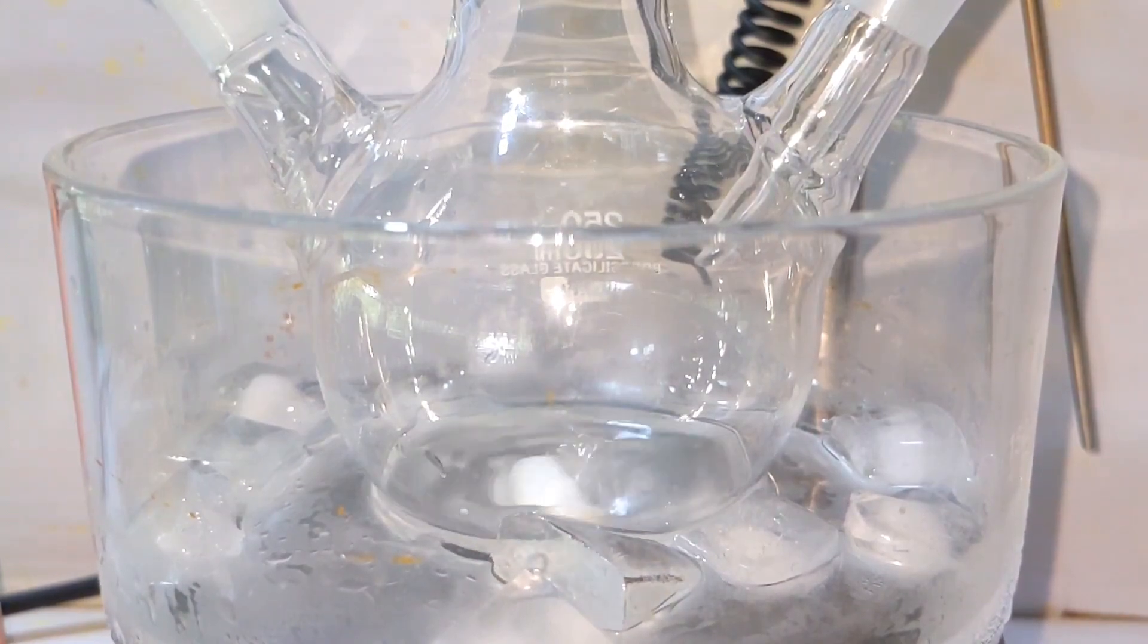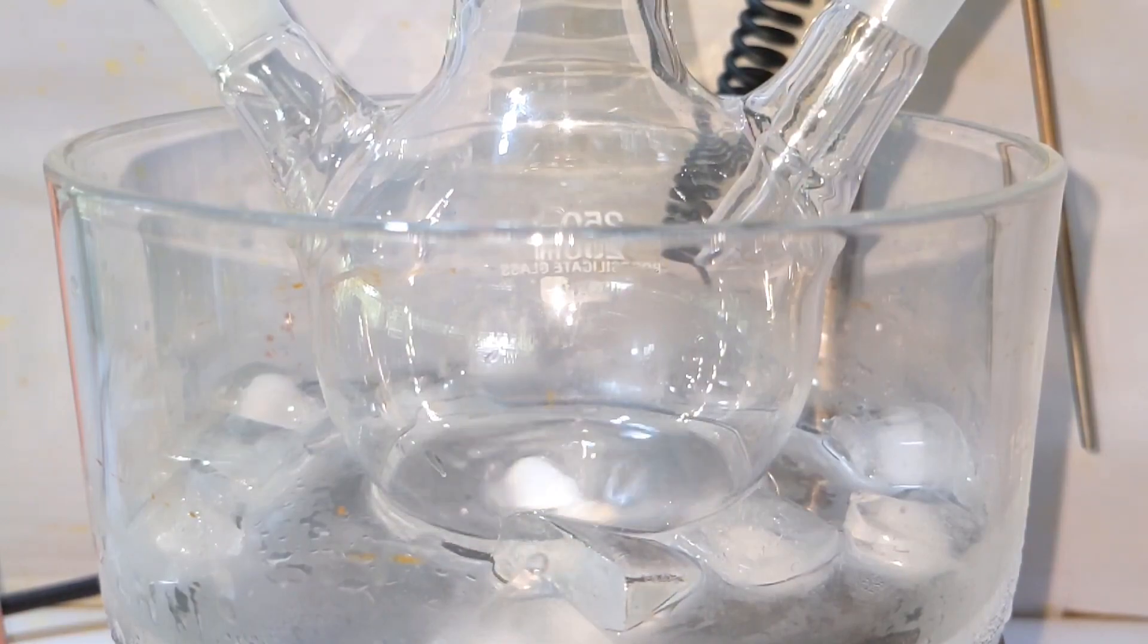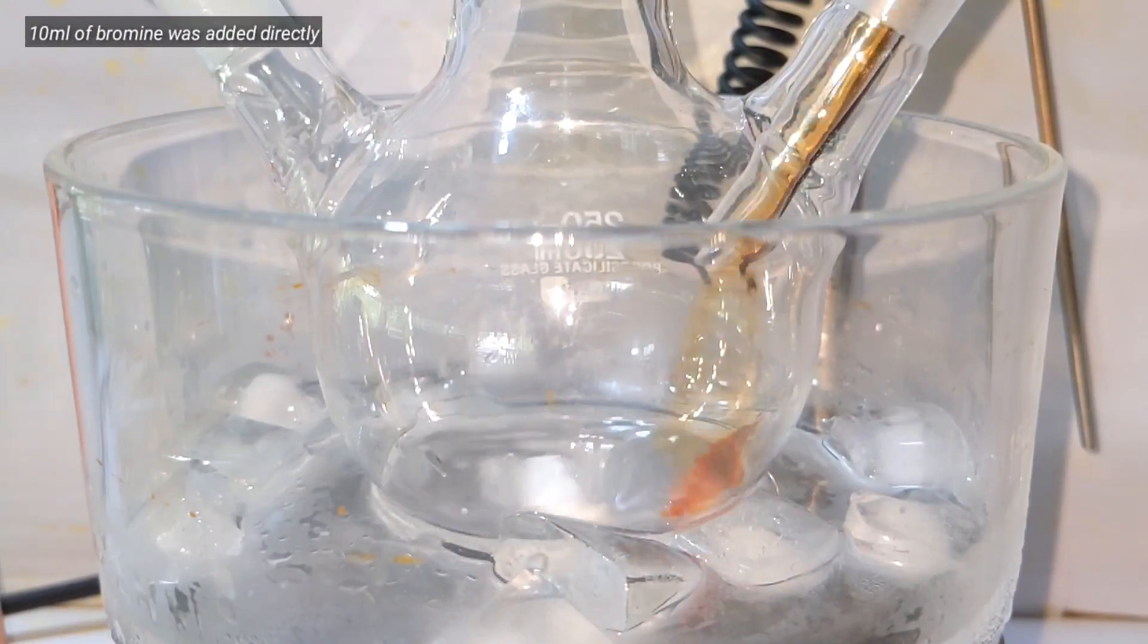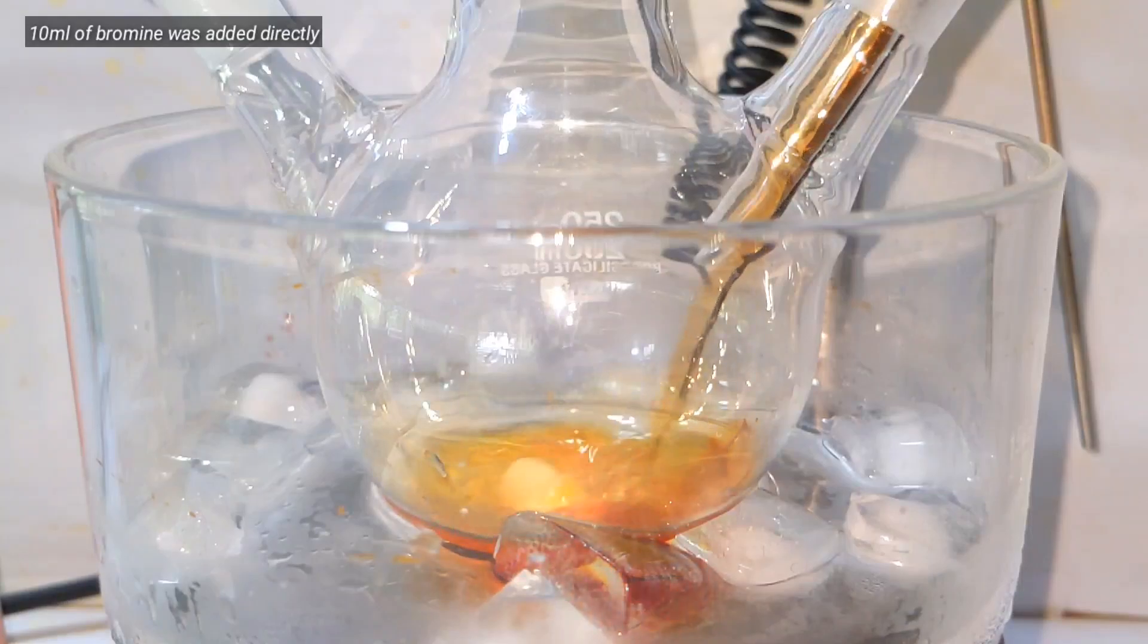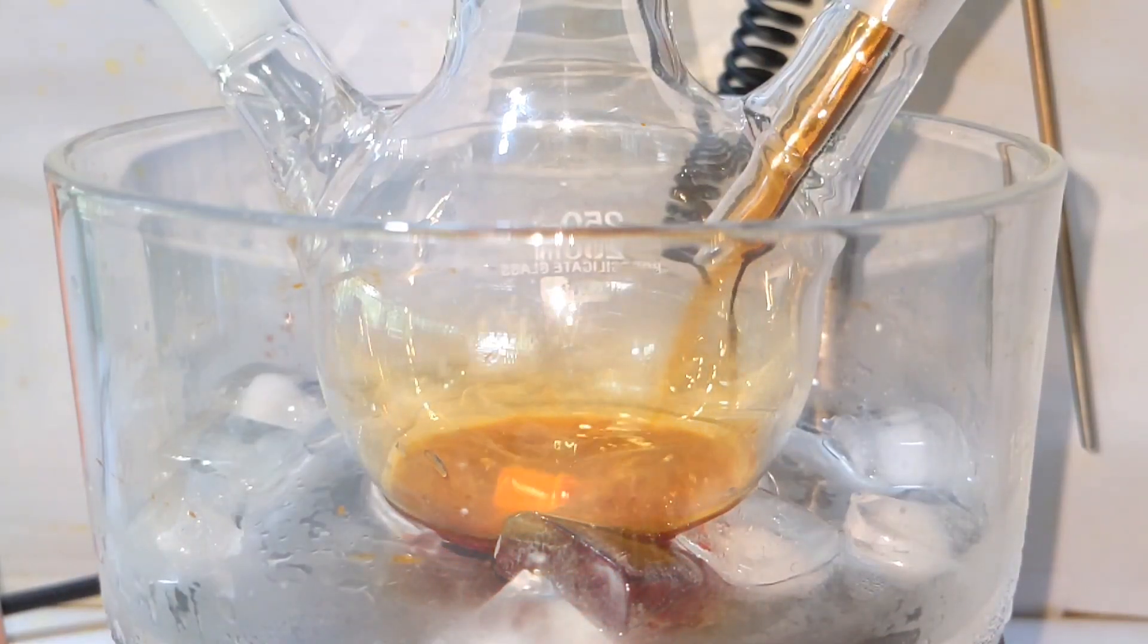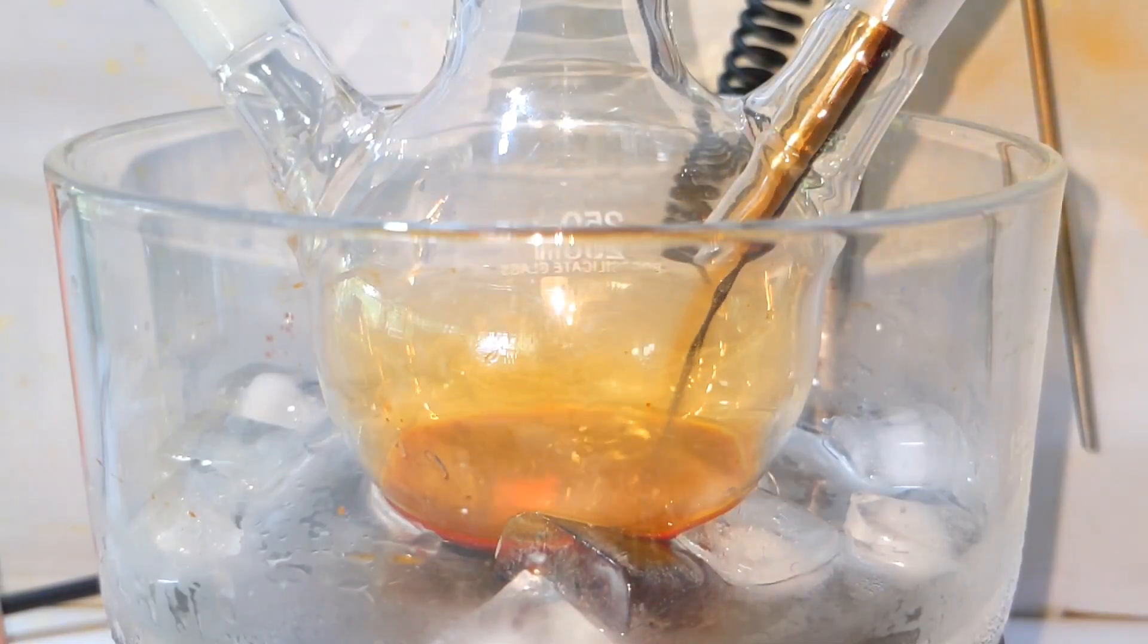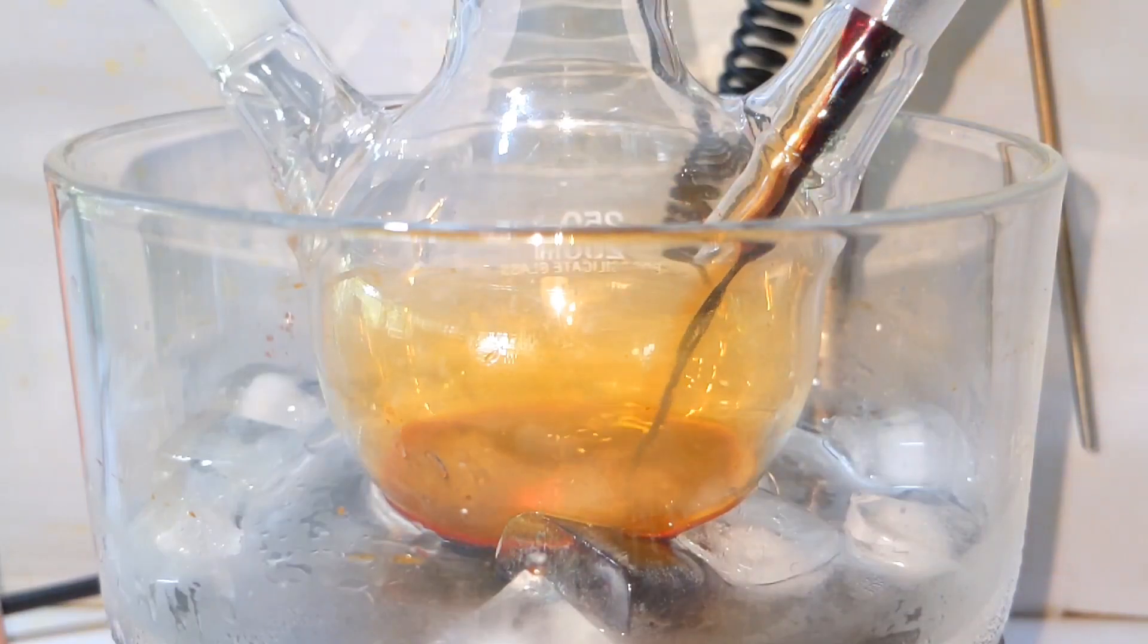With constant stirring, slowly add the 10 ml of liquid bromine measured in a graduated cylinder. The reaction soon commences and is exothermic. An ice bath will help prevent much of the bromine from vaporizing and creating an environment of bromine.